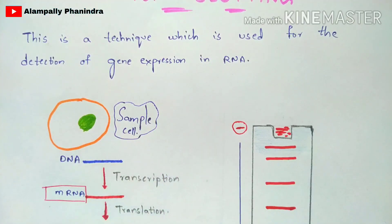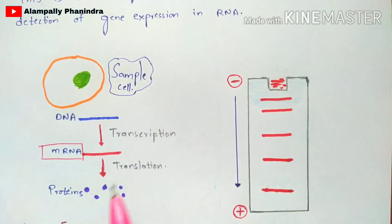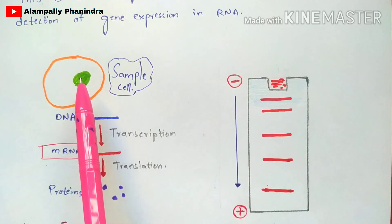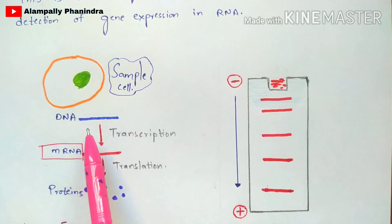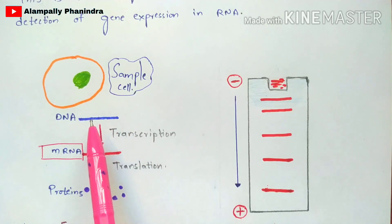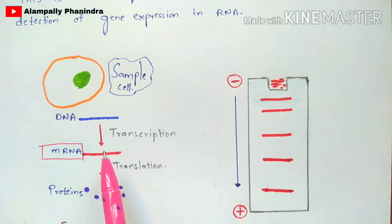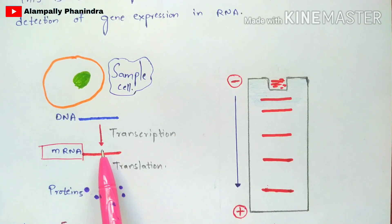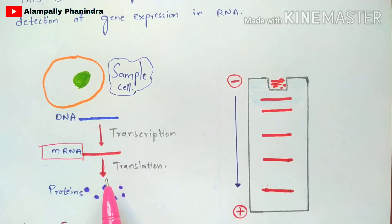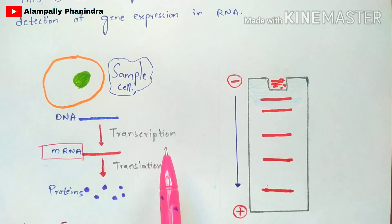To perform northern blotting, you first take a sample cell of interest. You cannot extract RNA directly from the sample cell, so you extract DNA from the nucleus of that sample cell. This DNA undergoes the process of transcription to produce mRNA, and that mRNA would normally undergo translation to form proteins — but here, the mRNA is extracted before translation occurs.